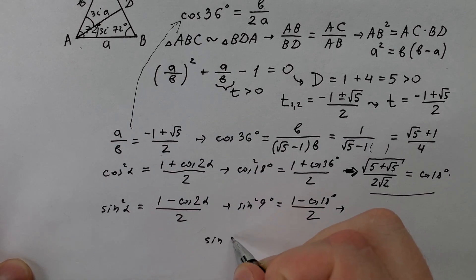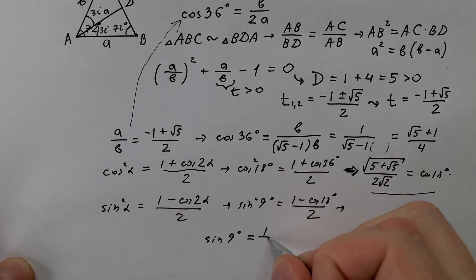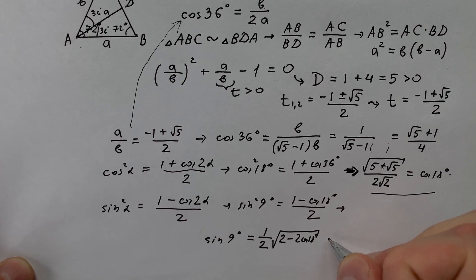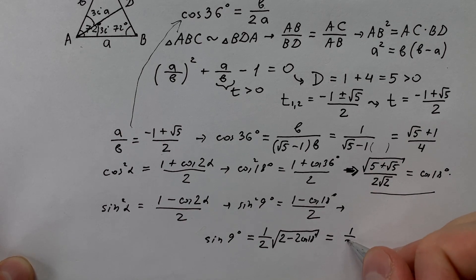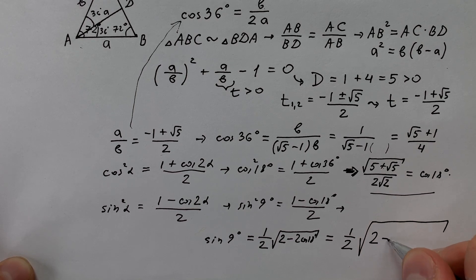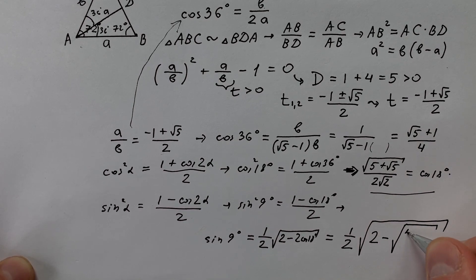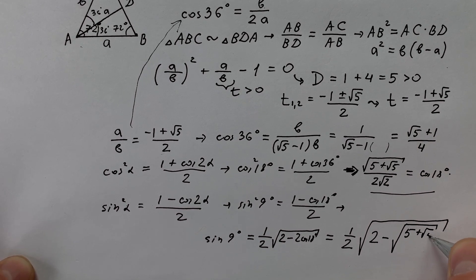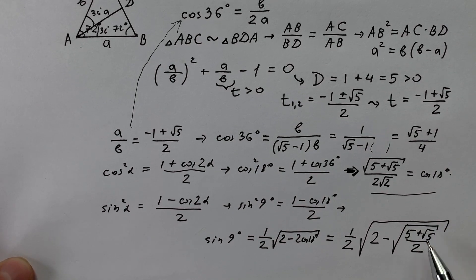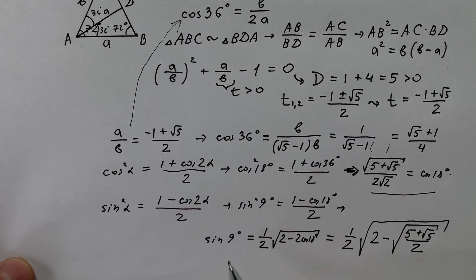We finally get that sine of 9 degrees equals to 1 divided by 2, 2 minus 2 cosine 18 degrees, and it equals to 1 divided by 2. Don't be frightened guys, it's very huge. 2 minus square root 5 plus square root 5 divided by 2. Oh my god. Square root under square root under square root. And this is the solution.